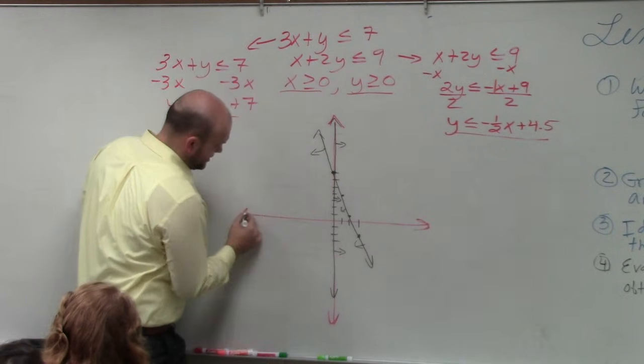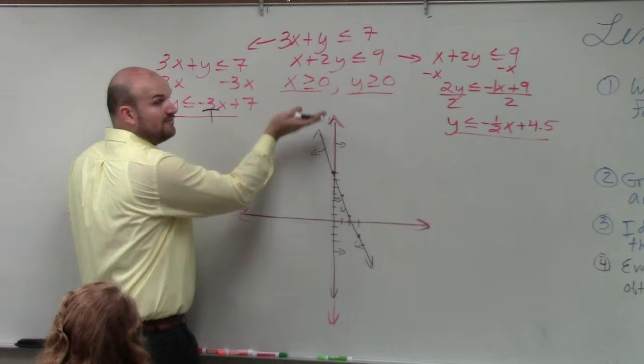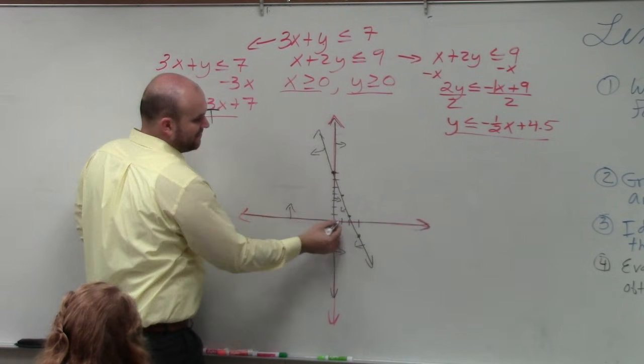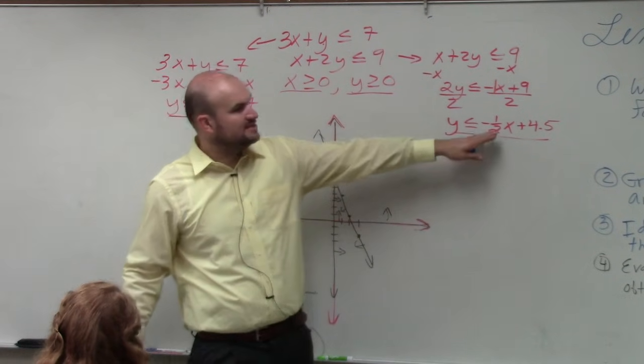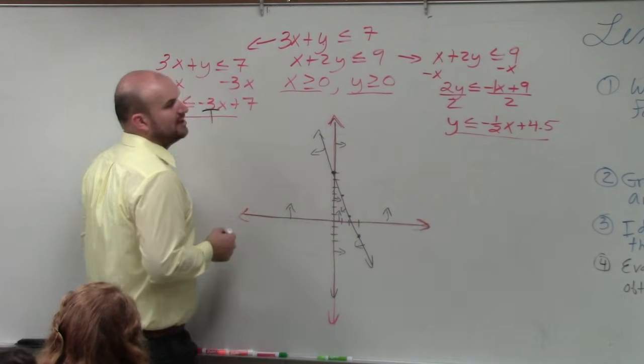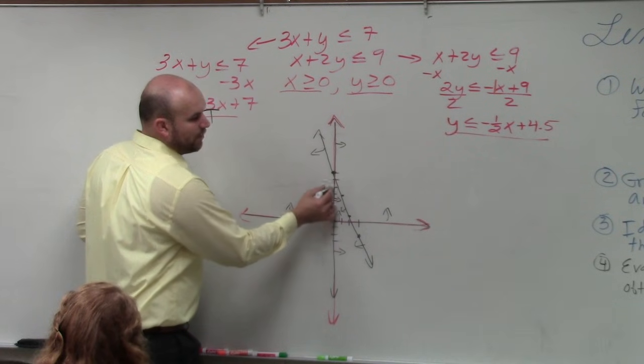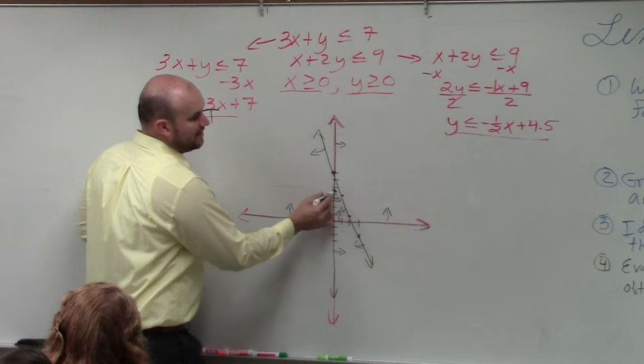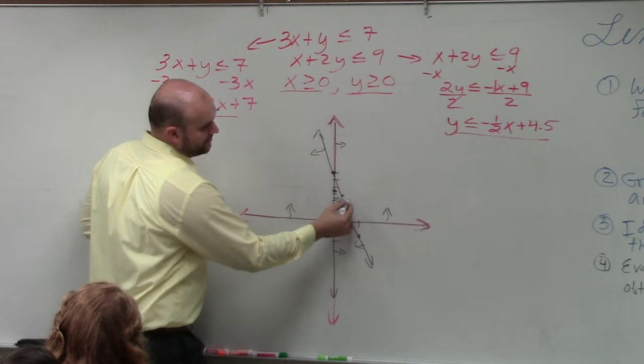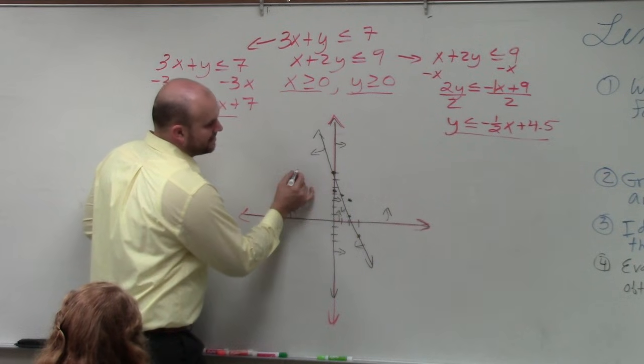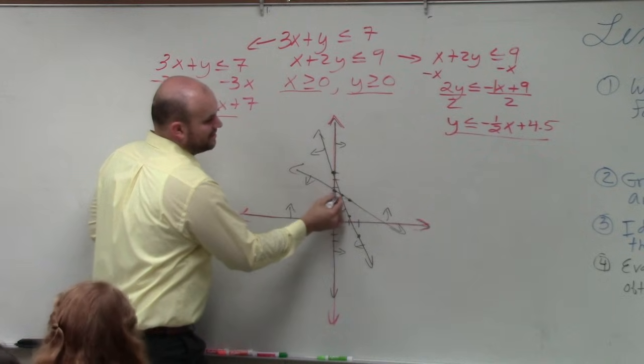y is greater than or equal to 0. That's a horizontal line. And all values of y that are greater than 0 are going to be above. And the last one is 4.5 plus negative 1.5x. So I go up to 4.5. 1, 2, 3, 4. 4.5 is in between. Then I go down 1 to the right 2. 1, 2. You guys can see it looks like it intersects right at that point. Then that is less than, so it's going to shade below.